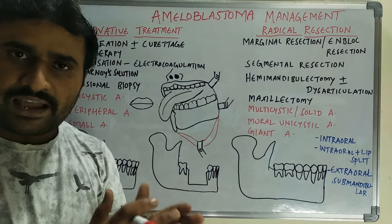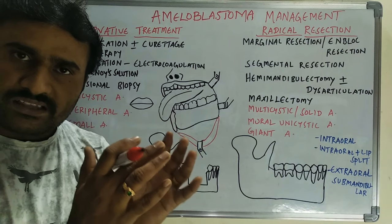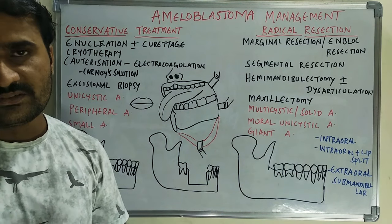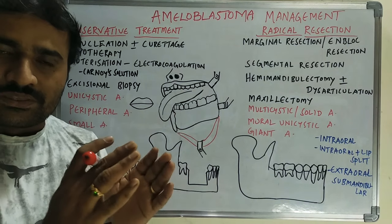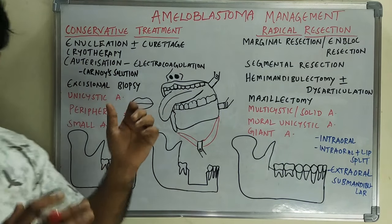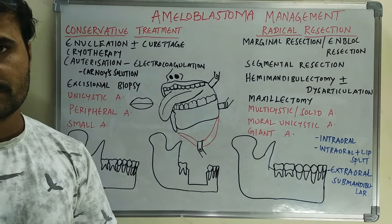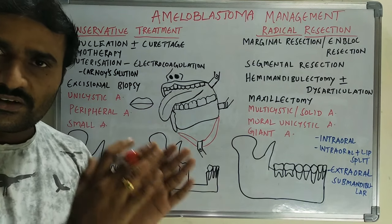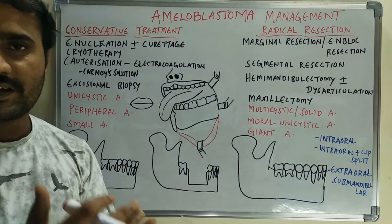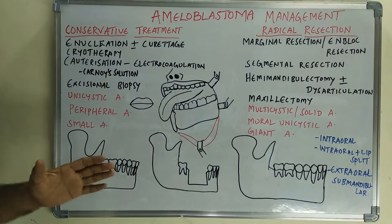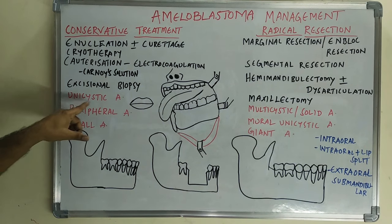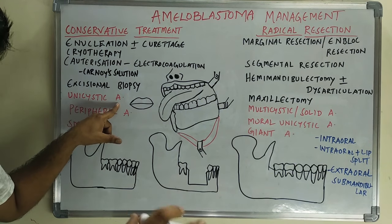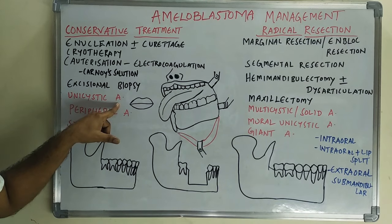Luminal and intraluminal unicystic ameloblastomas lack the capacity to invade the surrounding bone, so they can be treated by conservative treatment. But the disadvantage of conservative treatment is a high rate of recurrence. The indications for conservative treatment include luminal and intraluminal unicystic ameloblastomas.